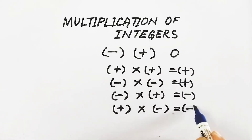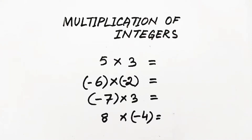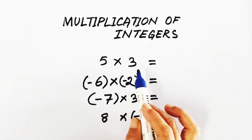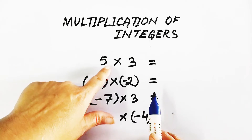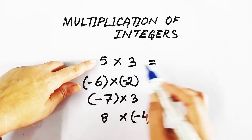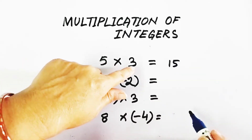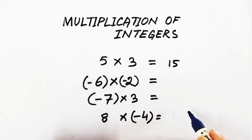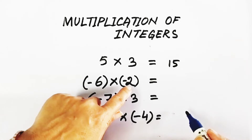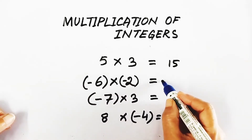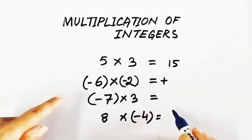Now let us take some examples to find the product. Here, 5 into 3: we find the product of the absolute values — 5 into 3 is 15 — and both are positive, so the product is positive. When there is any positive integer, we need not put the sign. Next, negative 6 times negative 2: both are negative, so the sign is always positive, and 6 twos are 12, so the product is simply 12.